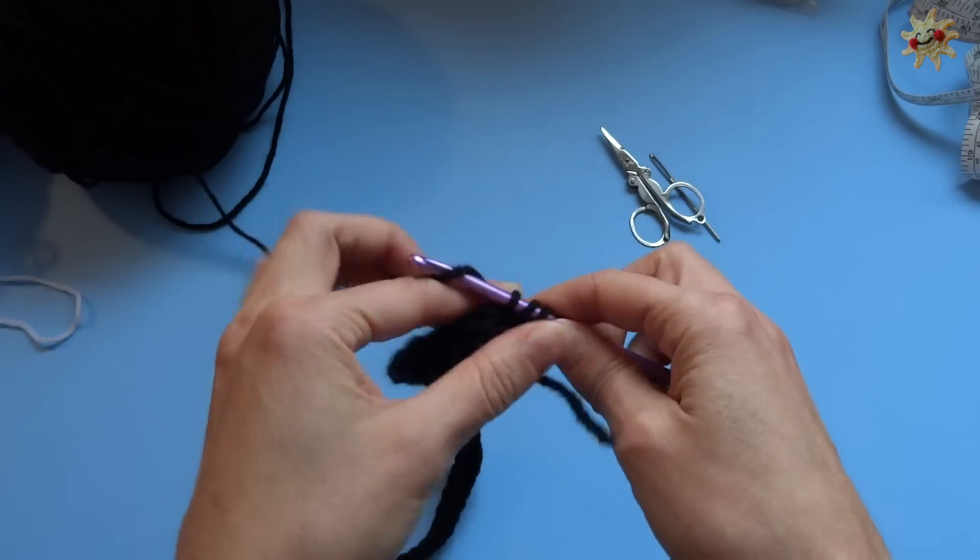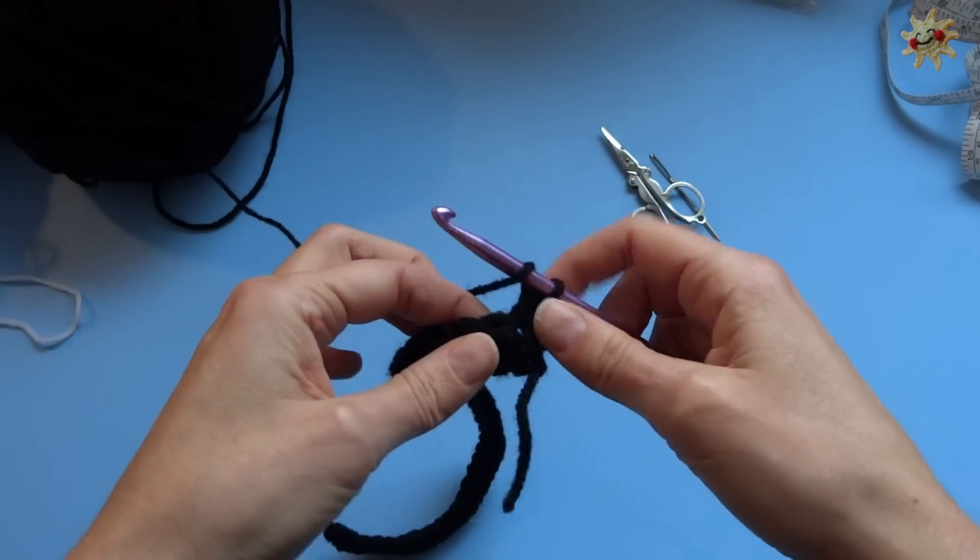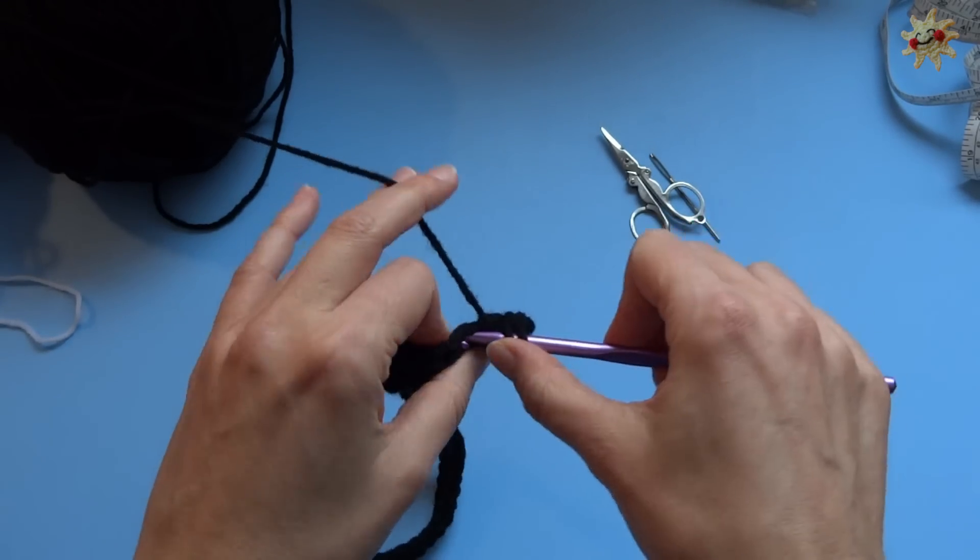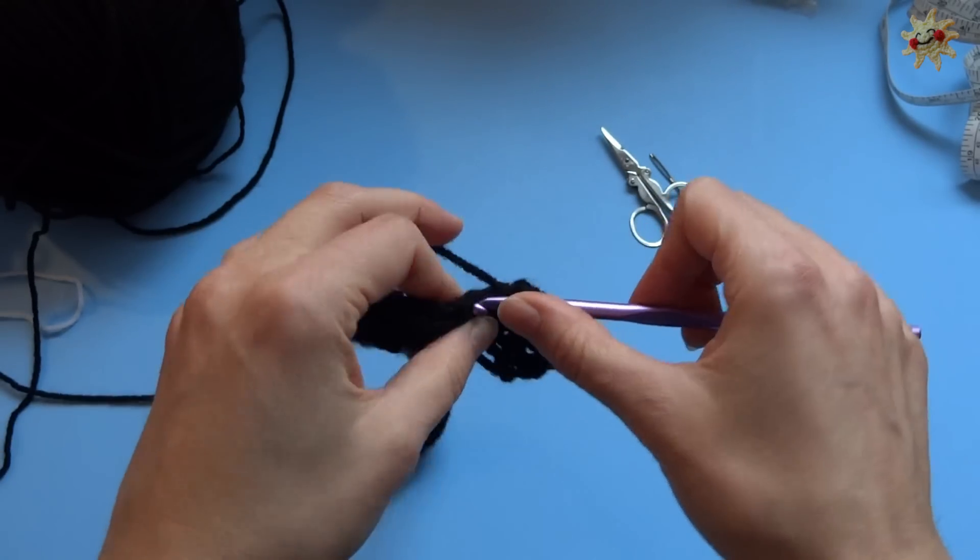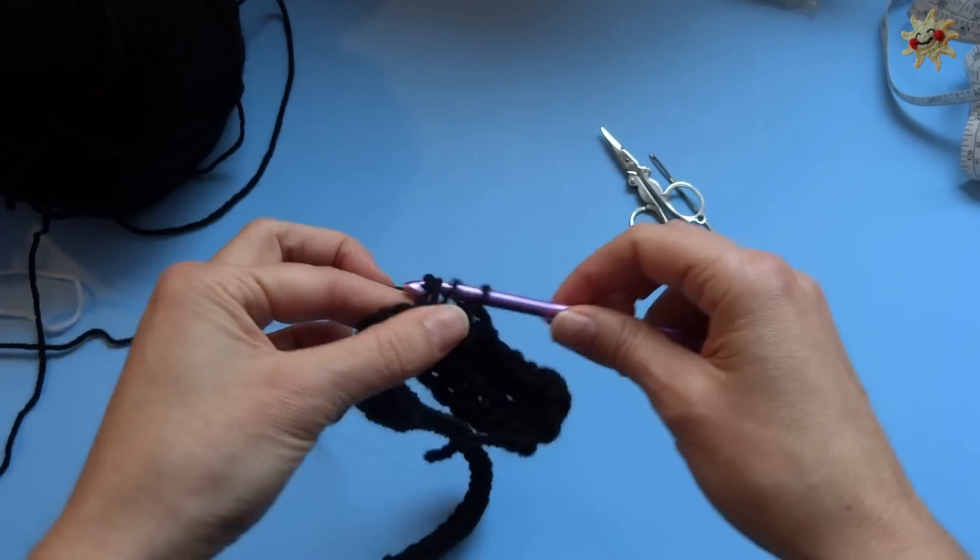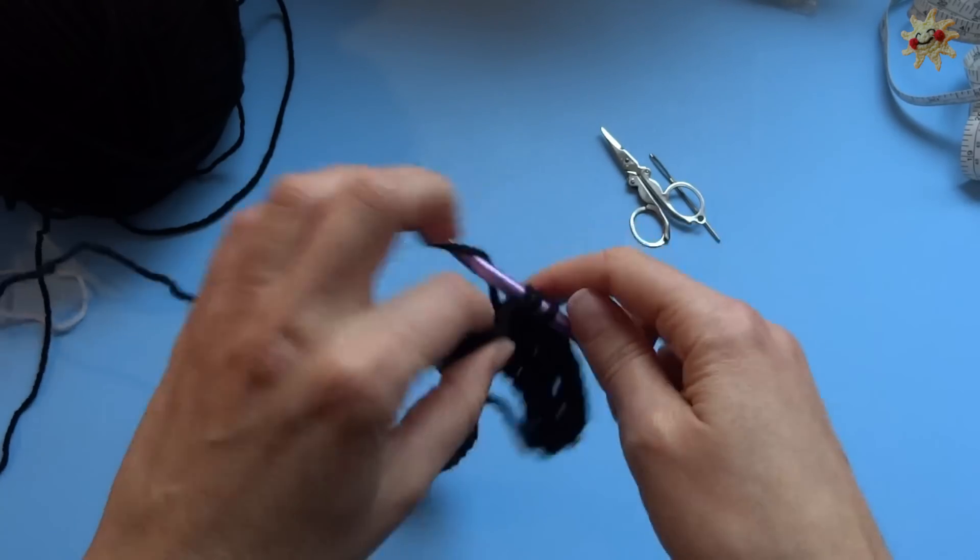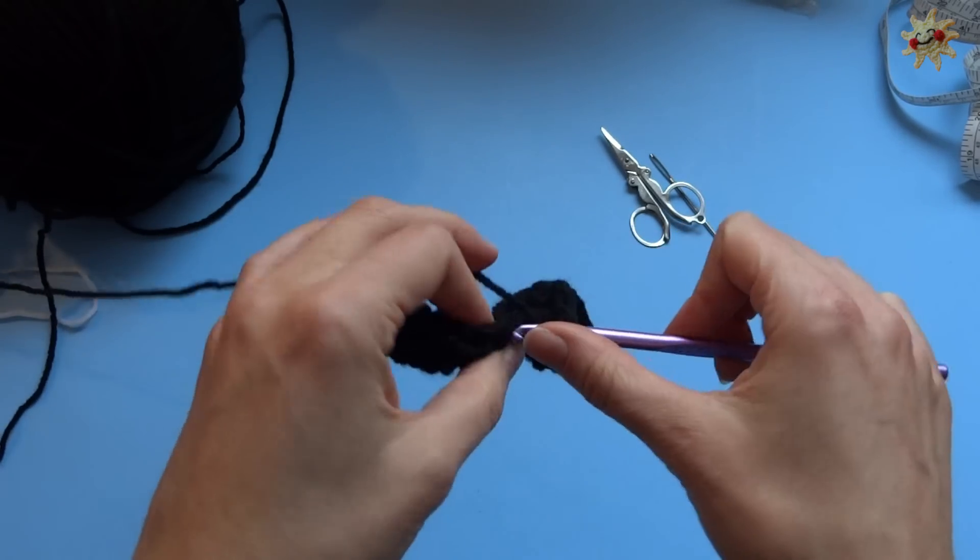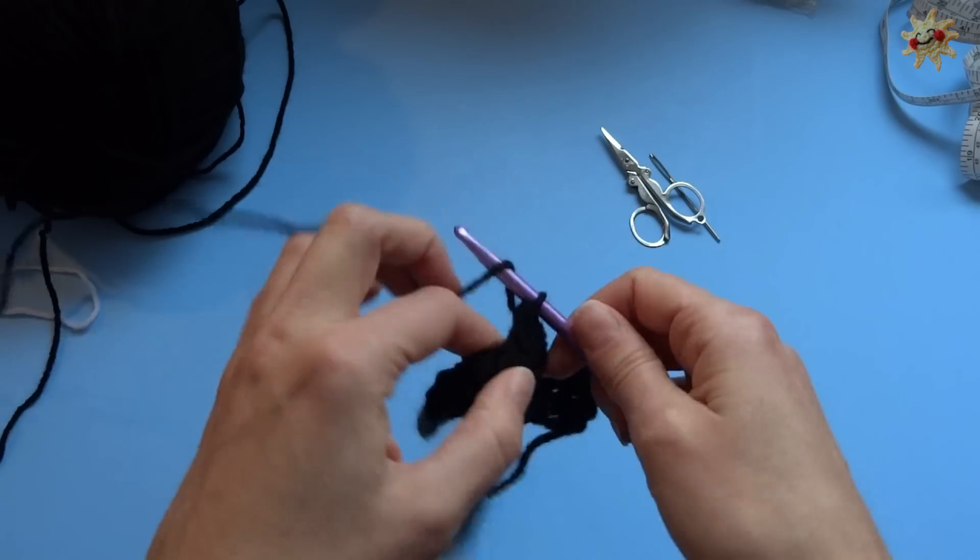So half double crochet, and you're going to half double crochet in each stitch all the way back along your work. And remember to count at the end of the row. You should have the same number of stitches that you had at the beginning of your, or should say at the end of your first row, which is the same number of chains that you had in your base foundation chain row.